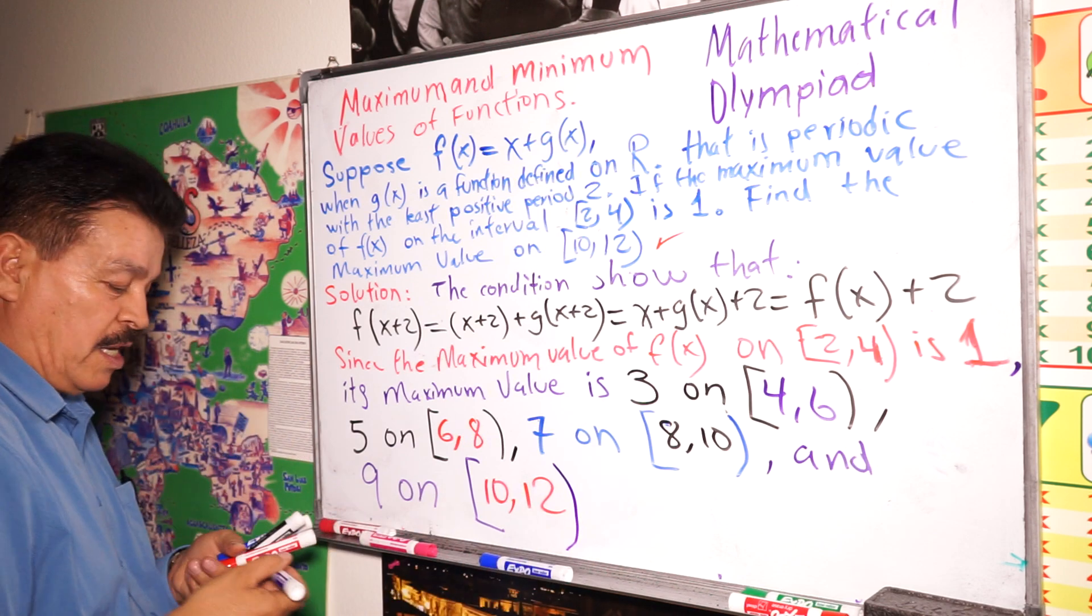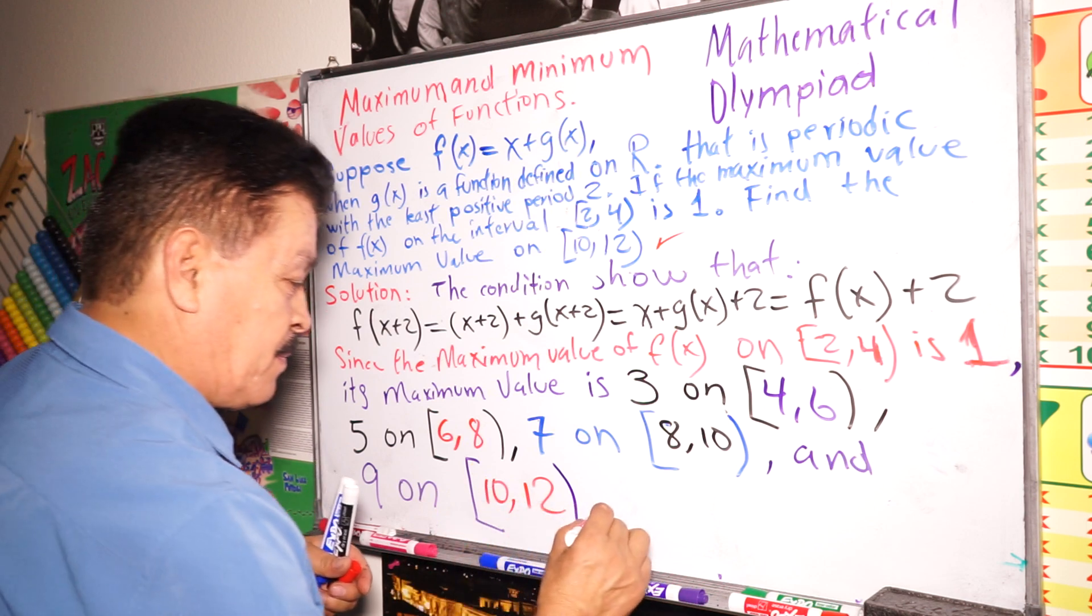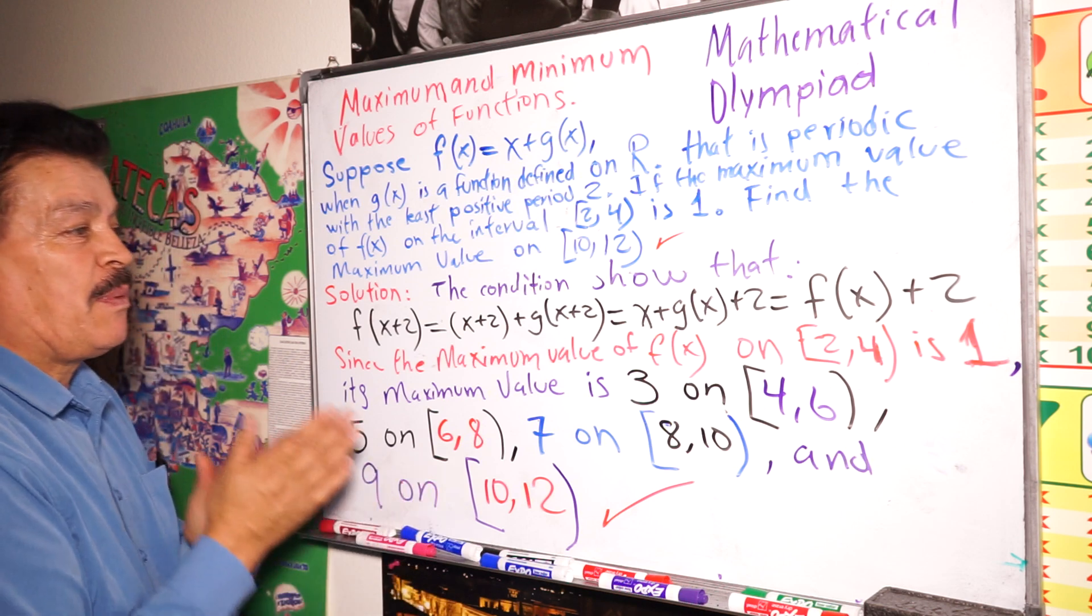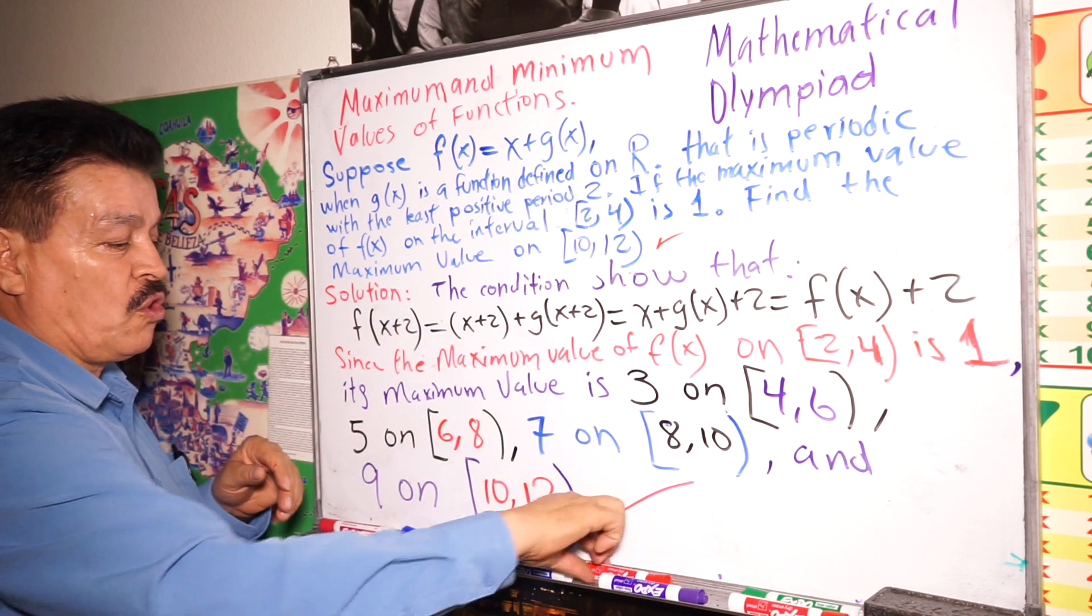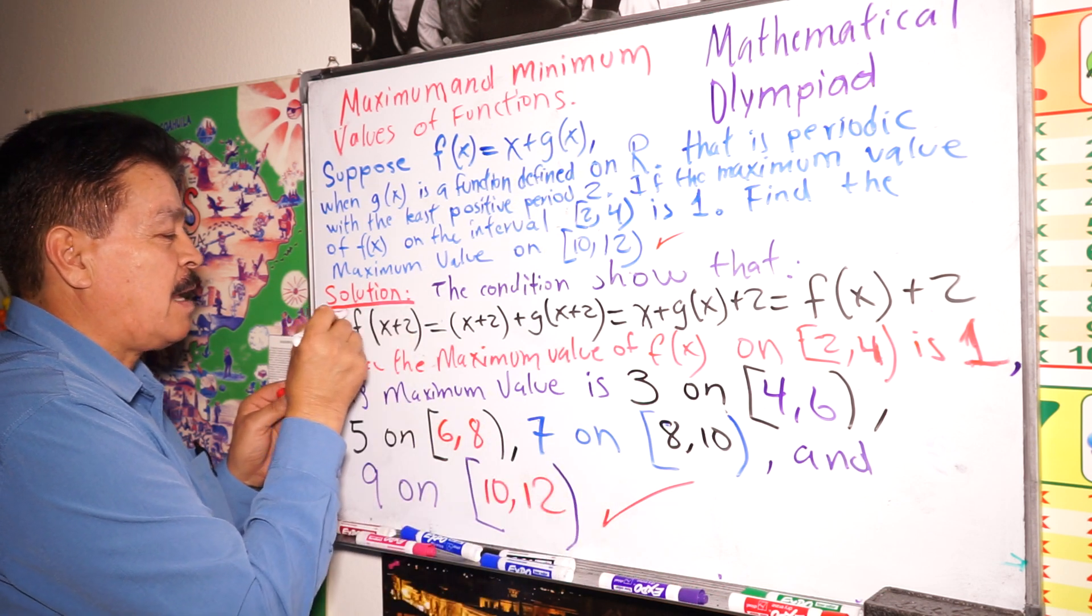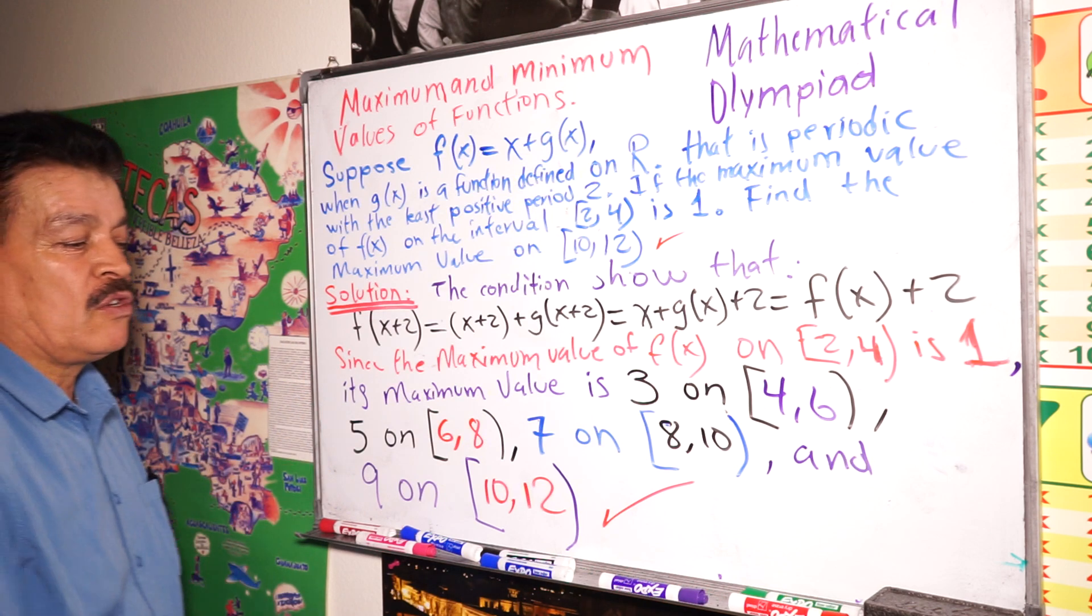So this is our solution. I told you, this problem was very, very easy. Mathematics Olympiad today, very simple question. See, I write everything of the solution step by step. Maximum and minimum values of function.